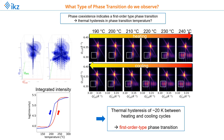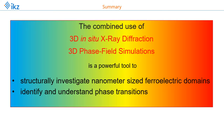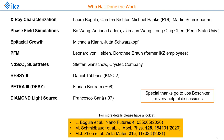We further prove the first-order nature of the transition by measuring a thermal hysteresis. Evaluating the intensity within a selected rectangular region in the experimental data as a function of temperature, we observe a thermal hysteresis of about 20 Kelvin between heating and cooling, supporting that this is a first-order phase transition. In summary, the combined use of 3D in-situ X-ray diffraction and 3D phase field simulation is a powerful tool to structurally investigate nanometer-sized ferroelectric domains and to identify and understand phase transitions. Thank you for your attention.